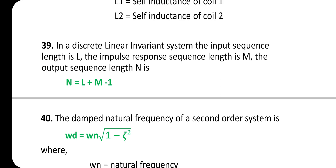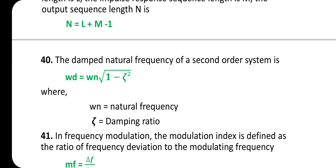In a discrete linear time-invariant system, if the input sequence length is L and the impulse response sequence length is M, then the output sequence length N = L + M − 1.